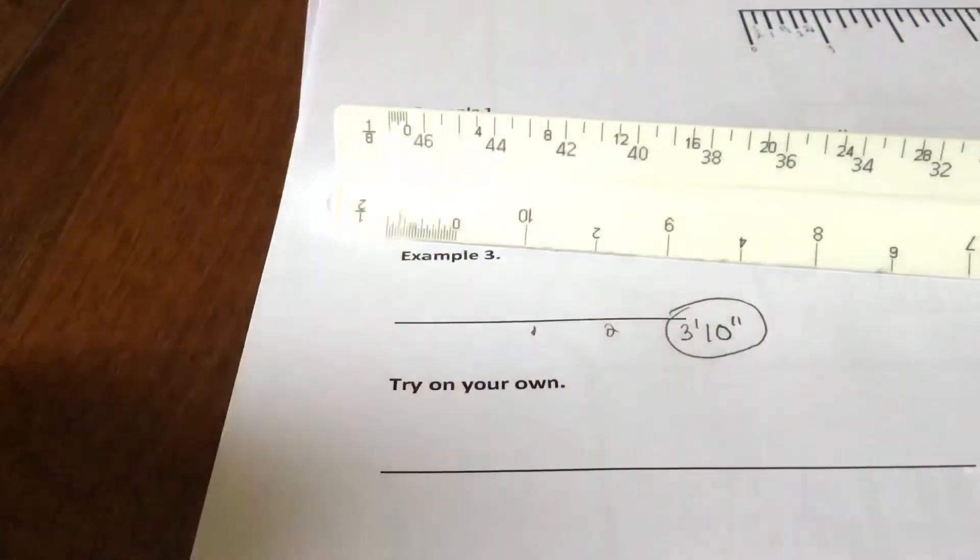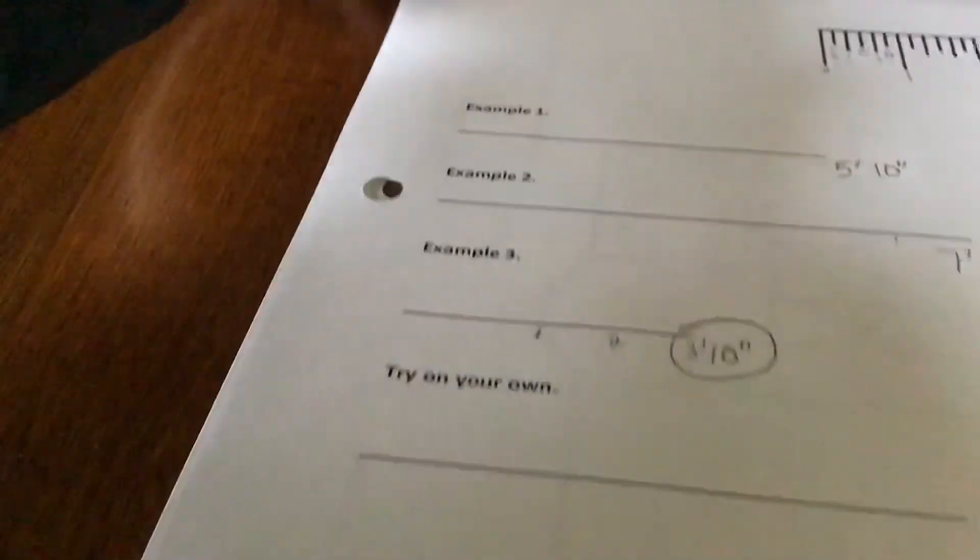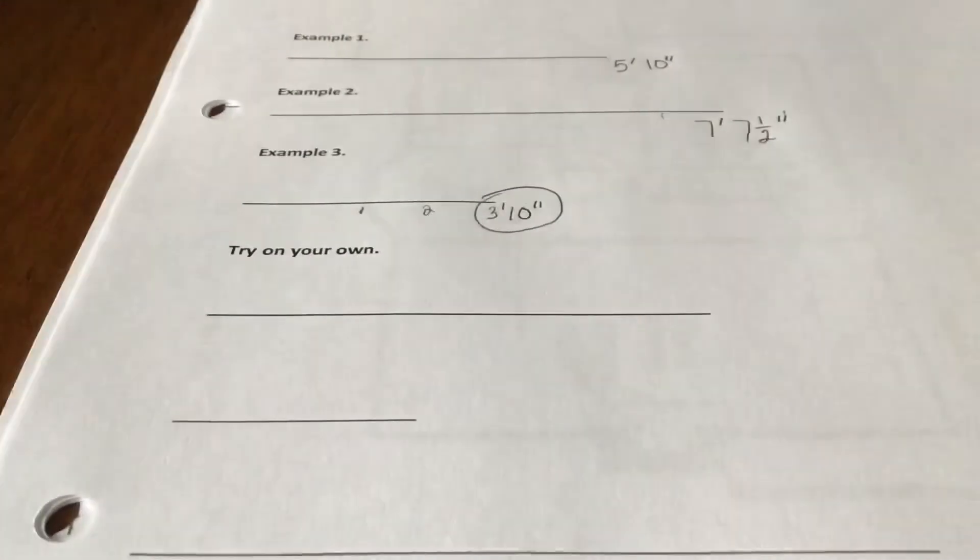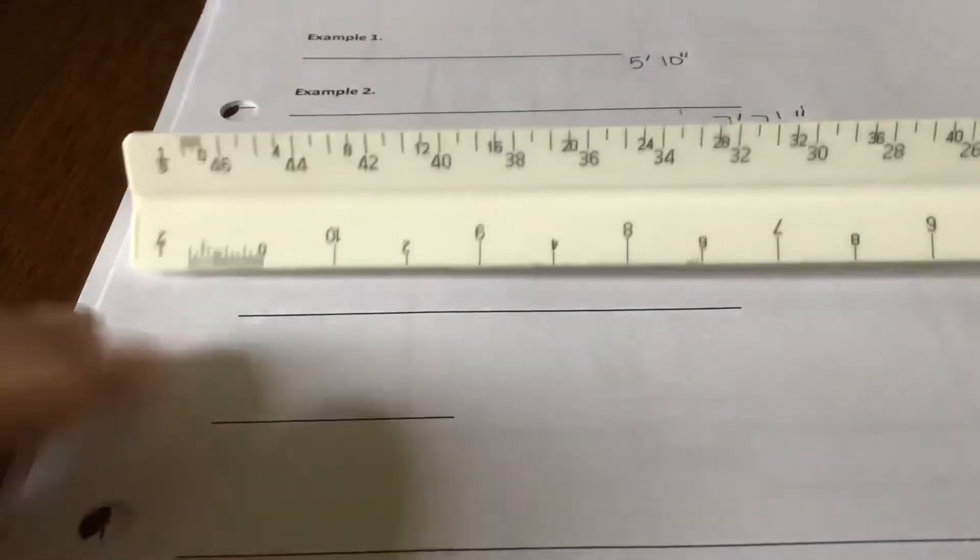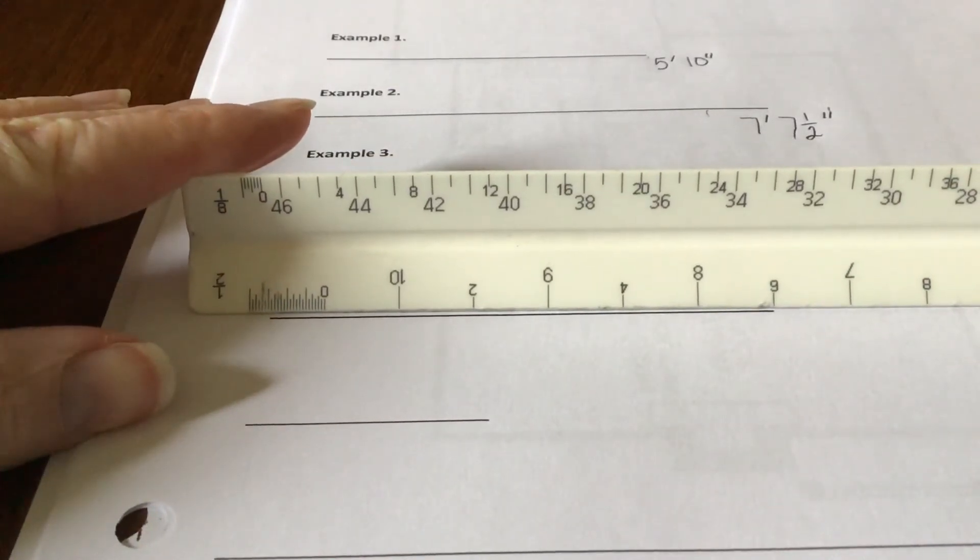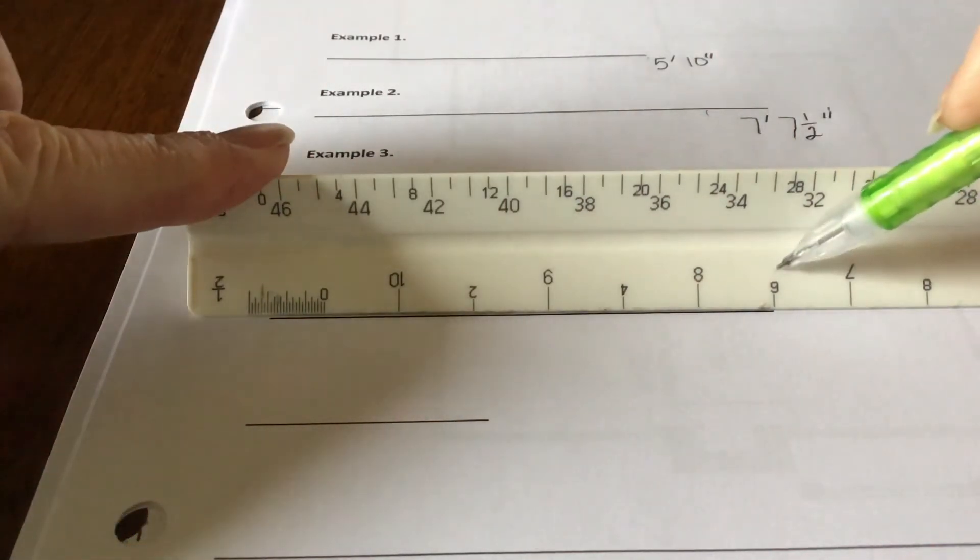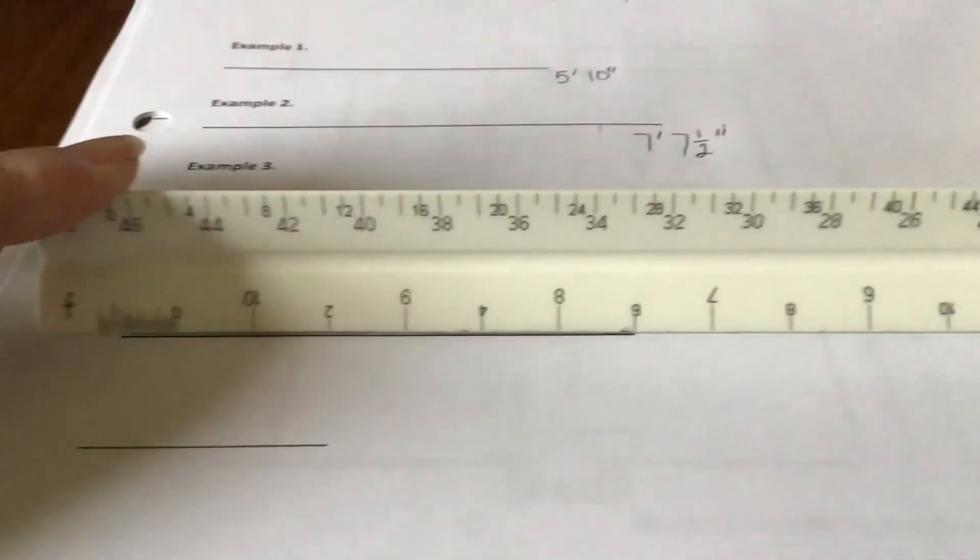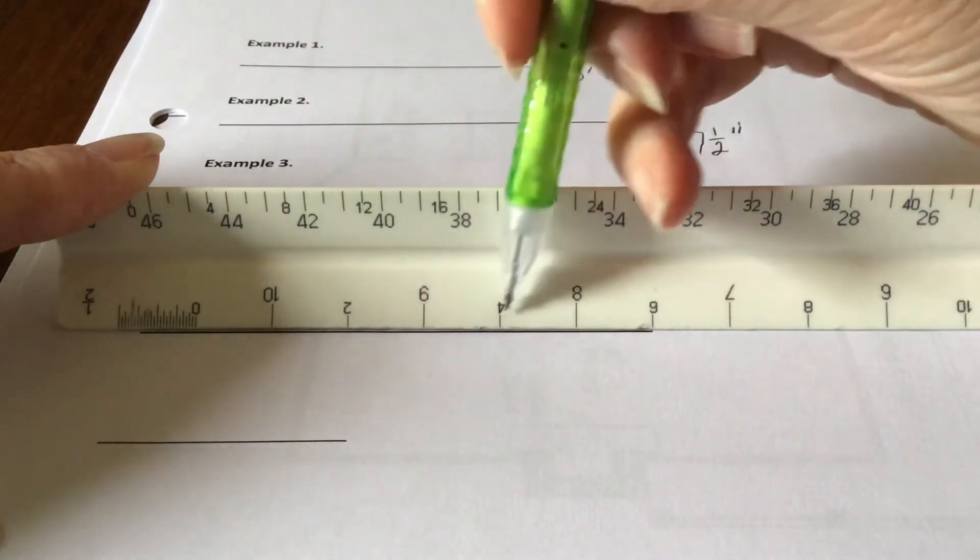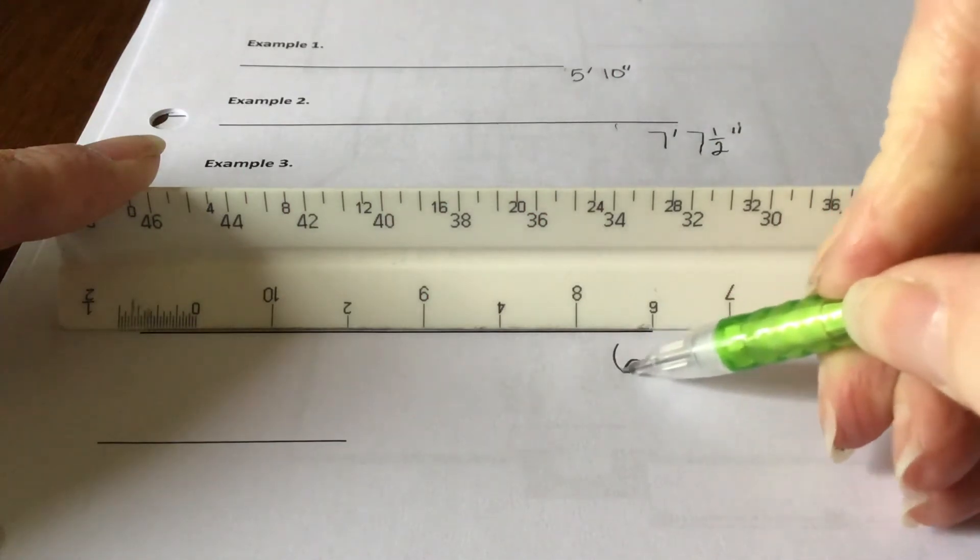I know this next one says try on your own, but I'd like to do one more example. So we're going to choose a mark to line up on. I'm going to choose this mark right here, which is a 6. And it's actually one of the smaller numbers. So it is a number that's on our half inch scale. So this is going to be 6 feet.